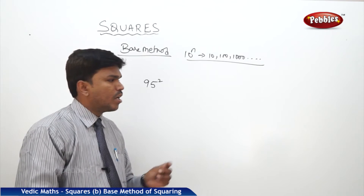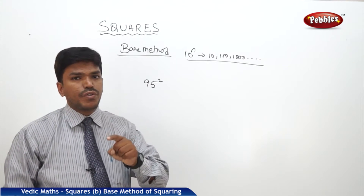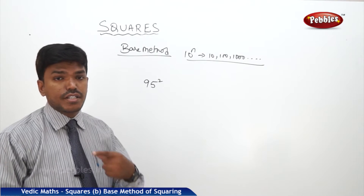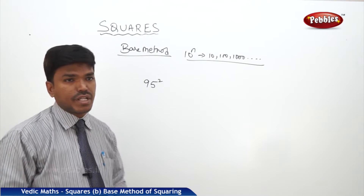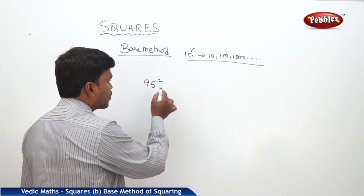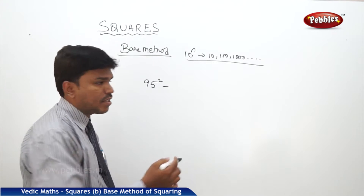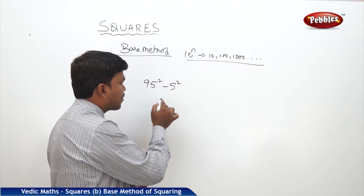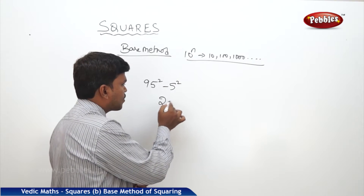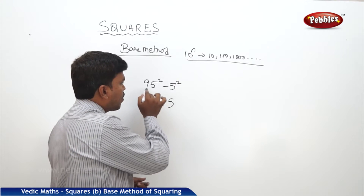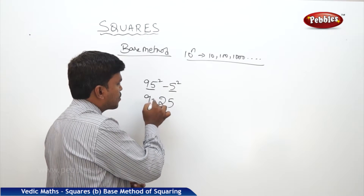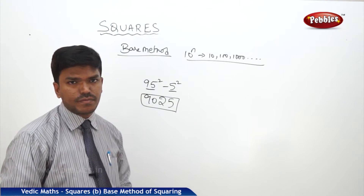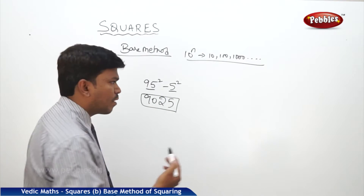First, check how much more or less 95 is than the base. It is less than the base, so put minus, and how much less? 5. What is 5 squared? 25. Write 25 on the right side. Now 95 minus 5 is 90. So your answer is 9025.